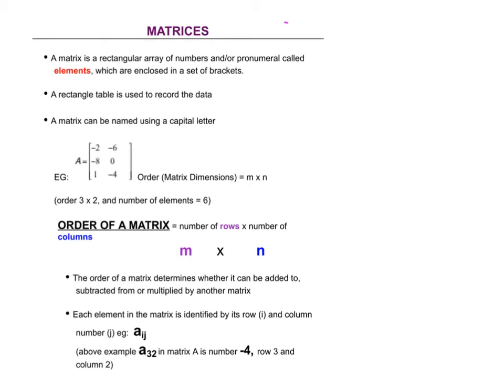Today we're going to look at matrices, which is our final unit for this year. A matrix is a rectangular array of numbers. Most of you have done matrices before — we have square brackets with data inside. The data inside, each of these individual things, are called elements. In this case, the one shown has four elements.